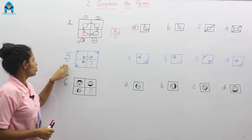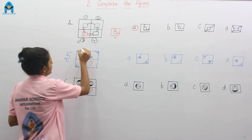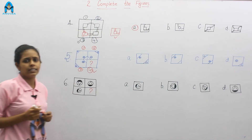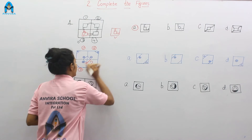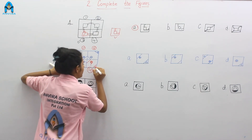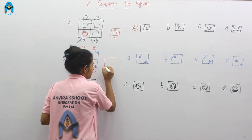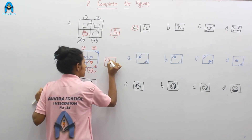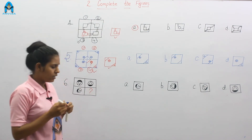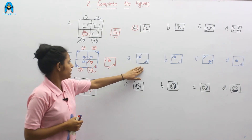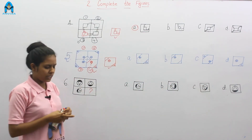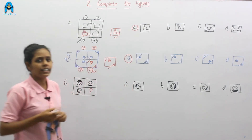Let's go to our next question, question number 5. In this question we have 4 parts: 1, 2, 3, and 4. And this fourth part is missing. Now complete this figure — a line with a circle with a plus sign, and a line with a triangle. The figure we made is: a line, a circle with a plus sign, and a line with a triangle. This is our correct figure. Now look at the options — which option is our correct option? Option A, option B, option C, or option D? Option A.